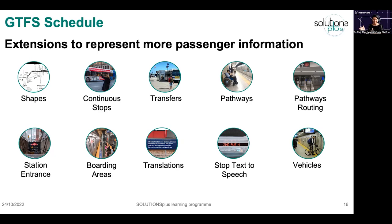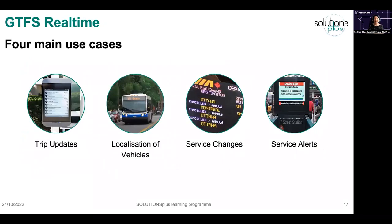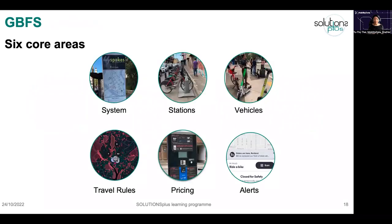Additional GTFS Schedule extensions include station entrances with multiple access points, boarding areas familiar to long-distance train travelers, translations for countries with several national languages or many tourists, stop text-to-speech for audio announcements on buses, and vehicle descriptions such as whether you can bring a bike on the train. GTFS Schedule goes hand in hand with GTFS Realtime, which is for dynamic information. It has four main use cases: trip updates, vehicle localization, service changes, and service alerts — very close to SIRI from the Transmodel ecosystem.